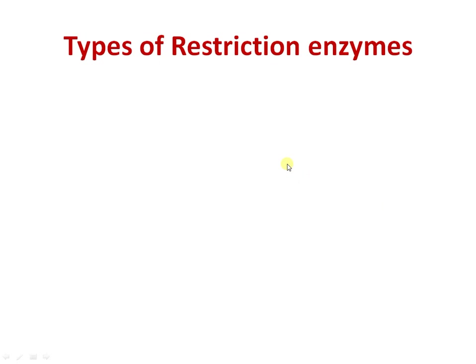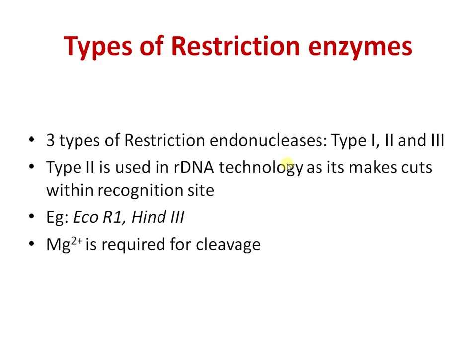There are different types of restriction enzymes — Type I, Type II, and Type III. Type II is used in recombinant DNA technology because it makes cuts within the recognition site. Type I and Type III also have a restriction or recognition site, but the cuts are made thousands of base pairs away. Type II examples include EcoRI. Magnesium ions are essential for the activity of Type II restriction enzymes.